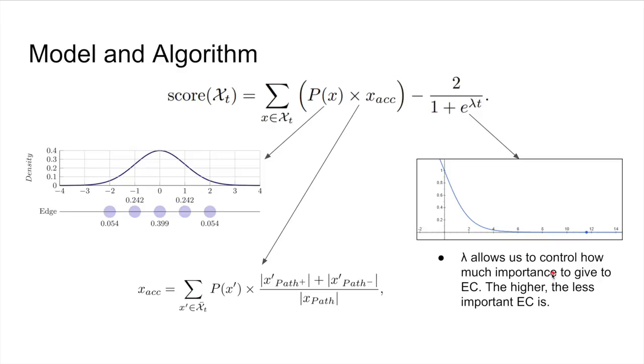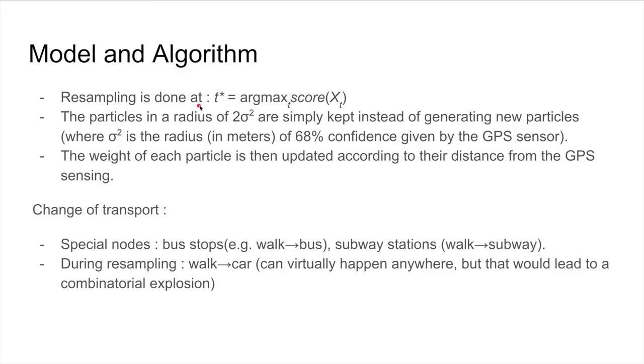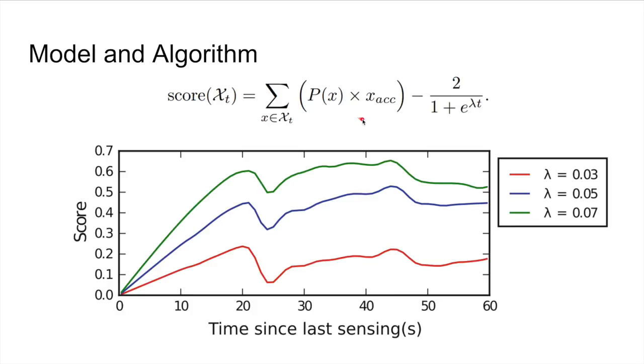Here's the graph obtained for the score function with different lambda parameters for the precedent example shown. Once we have the score function, we can do the resampling at time that has the maximal argument for score x_t. In this situation, the resampling would have been done at roughly 44 seconds for lambda equal to 0.05 and 0.07, and it would have been done at roughly 20 seconds for lambda equal to 0.3.